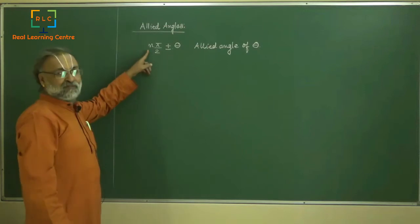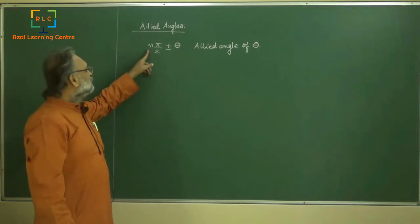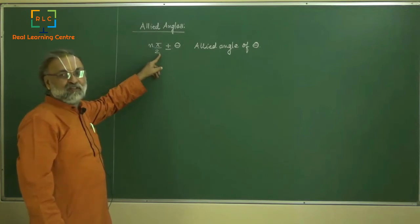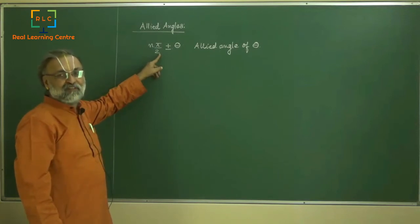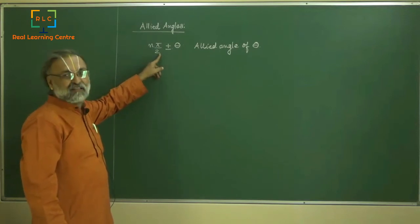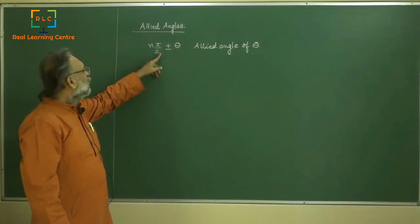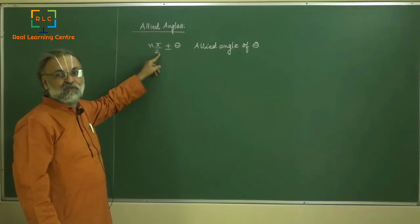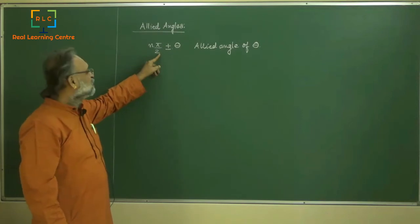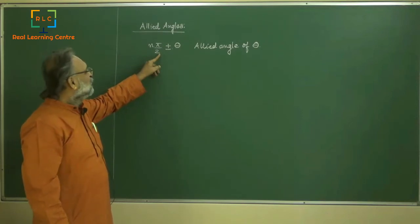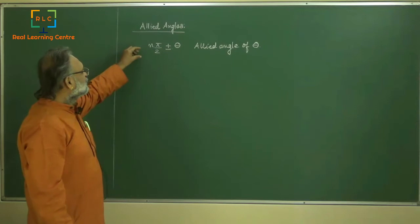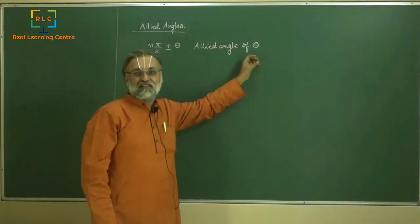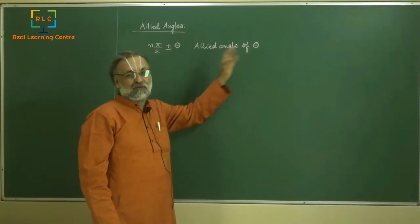Here, n is any integer. π/2 radian is a right angle, or you can say π/2 radian equals 90 degrees. Now, what are the allied angles of theta? I will just take an example and explain to you.